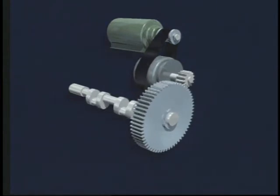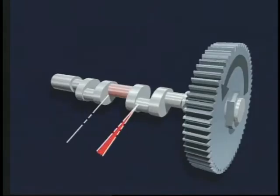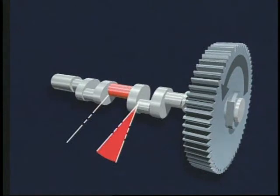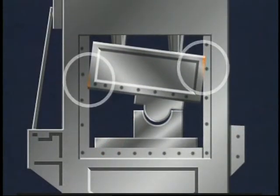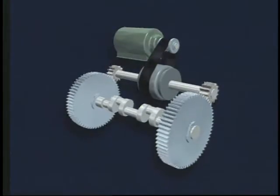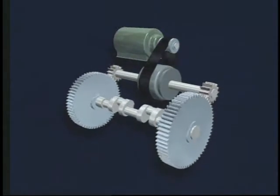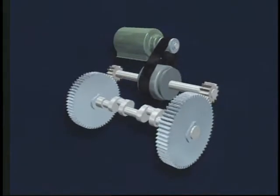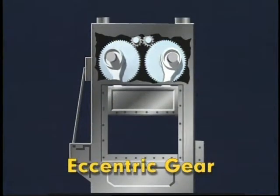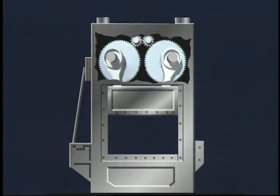A problem occurs with single end drive presses: angular misalignment, proportional to the torque transmitted through a crankshaft with two throws, causes the side of the ram nearest the driven end of the crankshaft to reach bottom dead center before the other side, resulting in a ram tipping alignment error. Angular misalignment of the crankshaft is avoided when the crankshaft is driven equally on both ends. Additionally, this angular misalignment is not an issue on eccentric gear presses, in which an eccentric is fastened to the main gears, thereby eliminating the use of a crankshaft altogether.